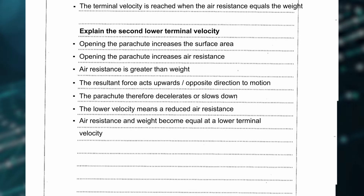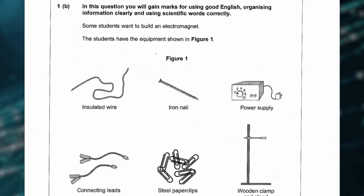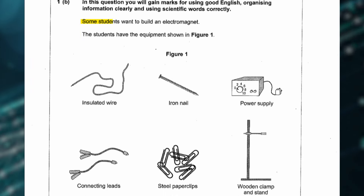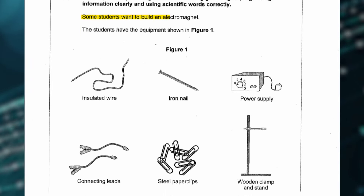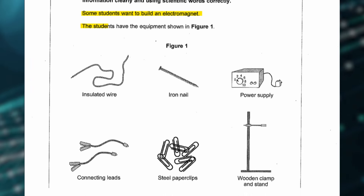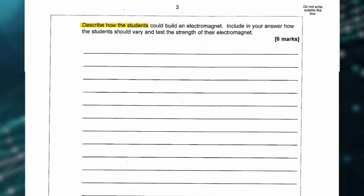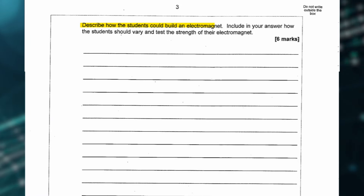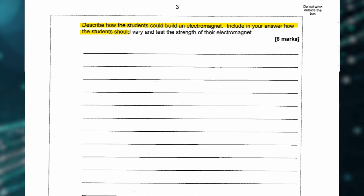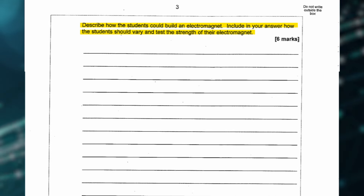That's everything for that 6-mark question. In this next question, some students want to build an electromagnet. The students have the equipment shown below. Describe how the students could build an electromagnet, and include in your answer how the students should vary and test the strength of the electromagnet, for 6 marks.